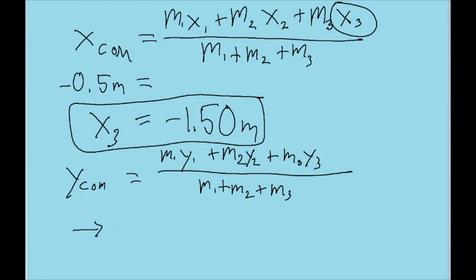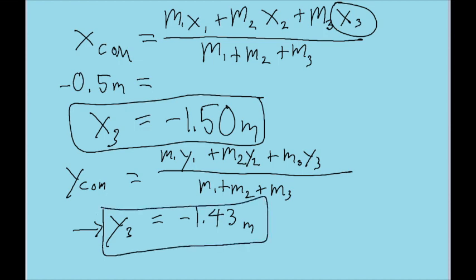Using that exact same process, we can solve for y3, and what we find is that it's equal to negative 1.43 meters. And so that's where the y position of the third particle will have to be.